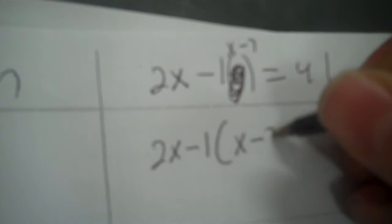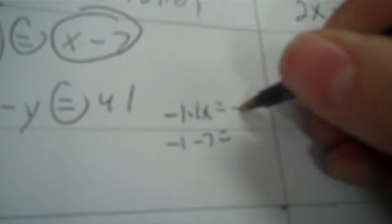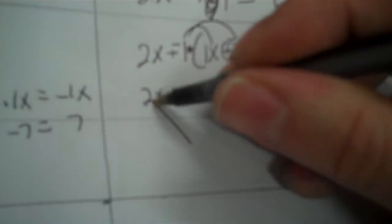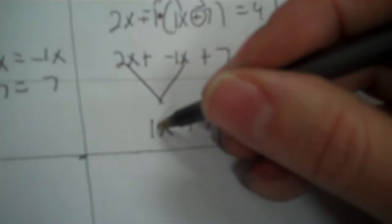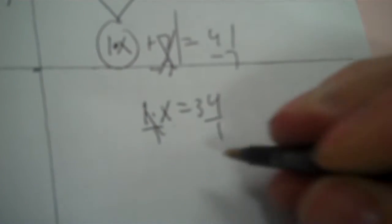So 2x minus 1 times parenthesis, insert x minus 7, equals 41. That's a negative 1 that you distribute. Multiply negative 1 to 1x — that gives negative 1x — and to negative 7, which gives positive 7. Add your 2x in front. So combining: 1x plus 7 equals 41. That gives 34. Divide by 1 is 34, so x equals 34.